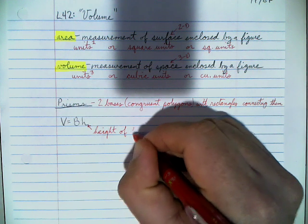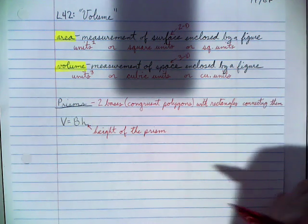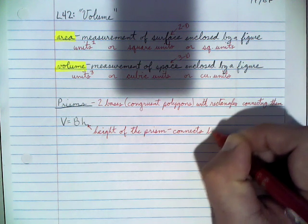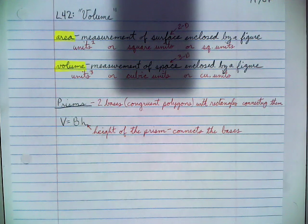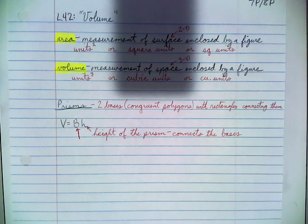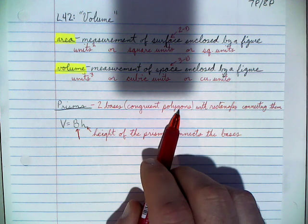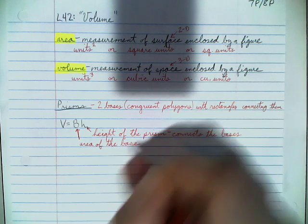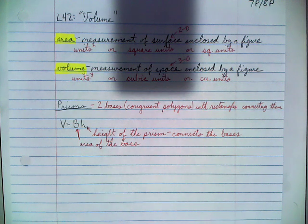Specifically, h is the height of the prism — the distance that connects the bases. So how long or how tall are those rectangles connecting base to base? The capital B stands for base, but because it's capital, this means we're calculating something about the base. Since the bases are polygons, what we want to calculate is their area. So if we calculate the area of the base and then multiply that by the height of the prism, that gives us the volume of our prism.